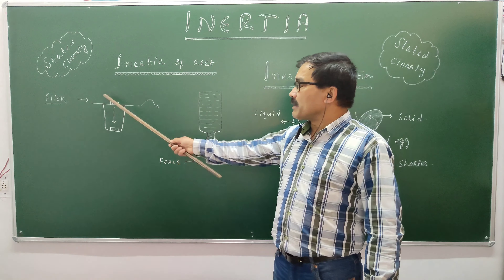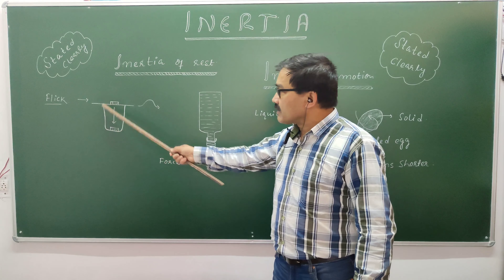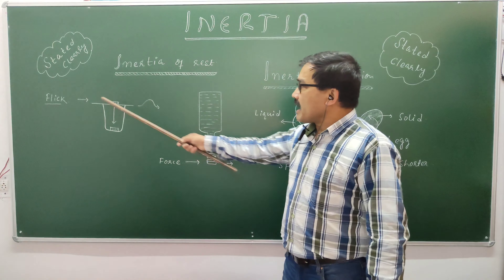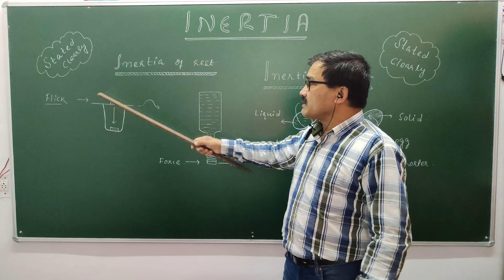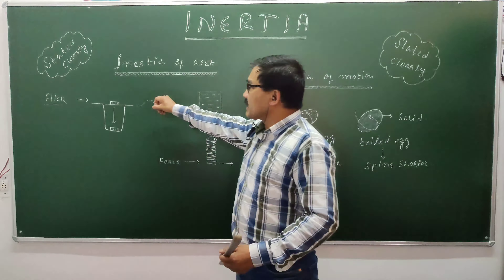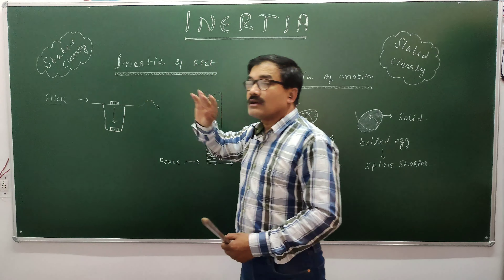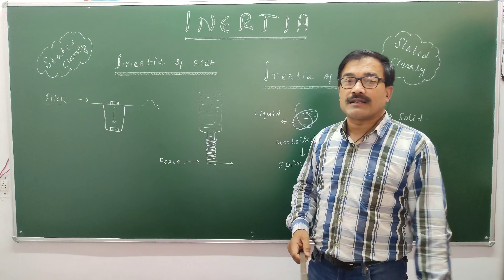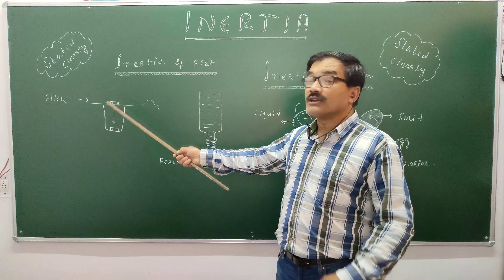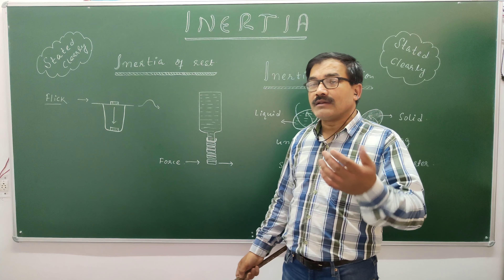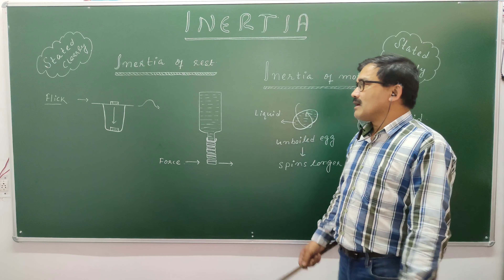In the first activity, we have taken a glass, a cardboard, and a coin placed on it. I will flick the cardboard and you will see the coin falling inside the glass. It tells us that the coin is trying to maintain its inertia of rest.